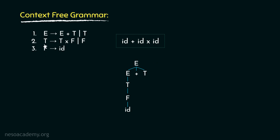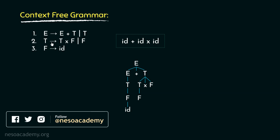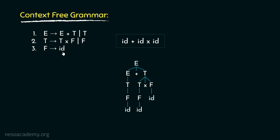So, using the production rule t can be rewritten as t into f, we can derive t into f from this t. Now, the format has been obtained. So, all we need to derive are the remaining ids. From this t, we will first derive f because of the production rule t can be rewritten as f. And then, from both the f's, we can derive ids using the production rule f can be rewritten as id. Observe the yield: id plus id into id.